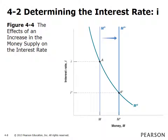Figure 4.4 shows that an increase in money supply shifts the money supply curve to the right. An increase in money supply thus leads to a fall in the equilibrium interest rate. At the original interest rate, money supply exceeds money demand, and thus interest rates need to fall in order for people to be willing to hold more money until it equals money supply.